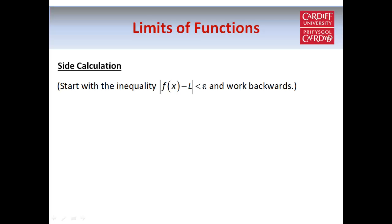A useful technique with these kinds of questions is to start with the inequality |f(x) - L| < ε and work backwards, because then we can work out what condition we need on the value of x, and then we can decide what delta should be.